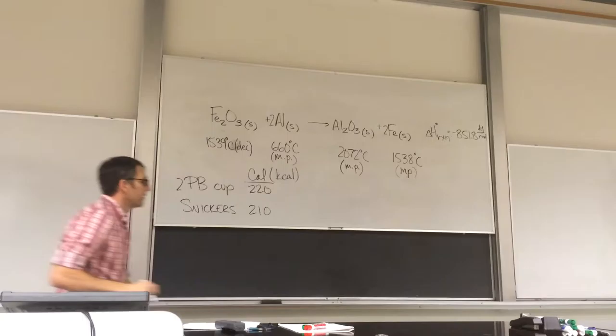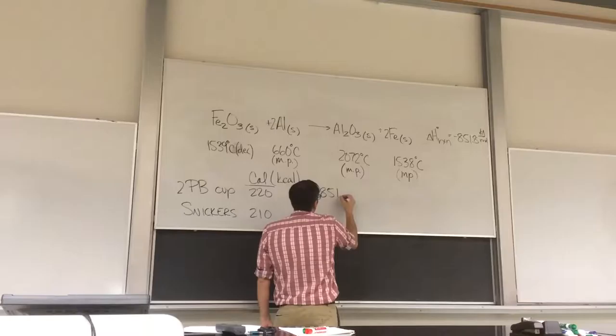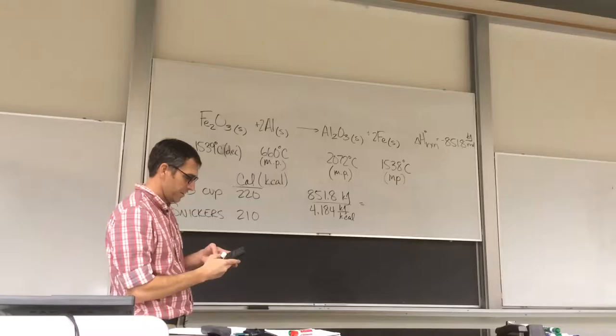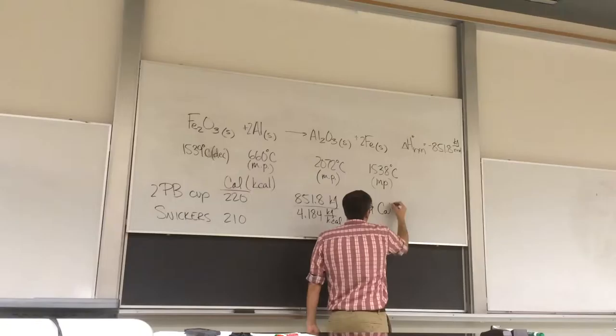And there's a relationship between kilocalories and kilojoules. 4.184. Good. Okay, so if I have 851.8 kilojoules, and I have 4.184 kilojoules per kilocalorie, what I'm going to get is, I don't think I have this, no. Okay, let me do that real quick. 851.8 divided by 4.184, 204. Nutritional calories.